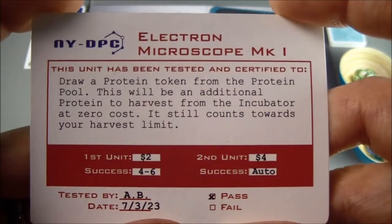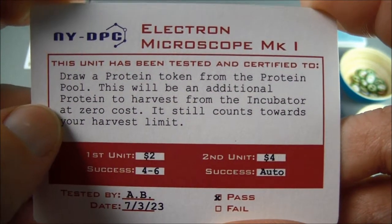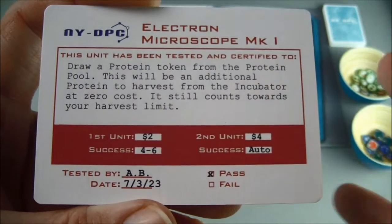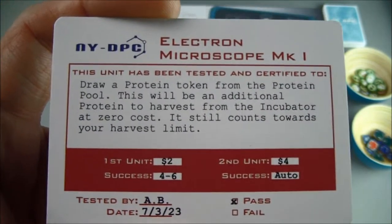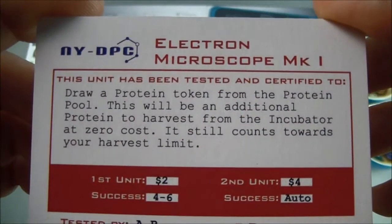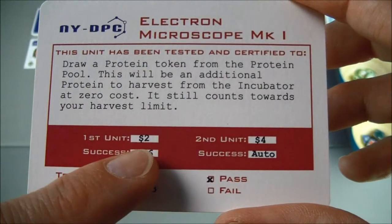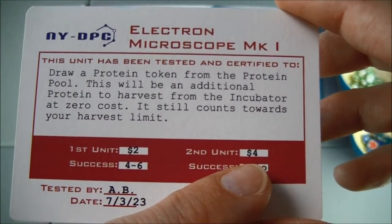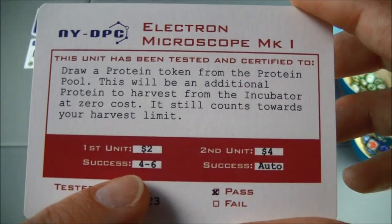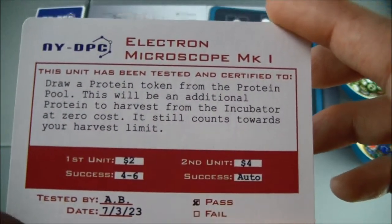And then here we have the electron microscope mark one. You can draw a protein token from the protein pool. This will be an additional protein to harvest from the incubator at zero cost. It still counts towards your harvest limit. And normally you can only draw or harvest two proteins during a turn, but there are things that modify that and that's what they mean by harvest limit. Now there are two of these cards in the game. Each piece of equipment has two cards. When you purchase the first unit it costs you two of this particular one, the second unit would cost you four. Now if you only have one unit you have to roll and a four or five or six means that it works properly. If you roll one, two or three it doesn't work. If you have both units of a particular piece of equipment it automatically succeeds.